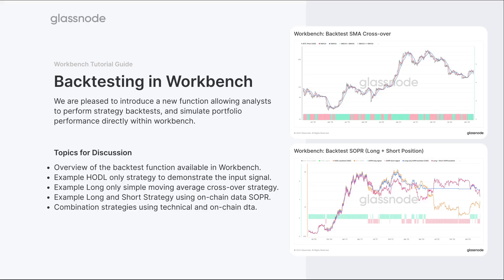In terms of backtesting and Workbench, we're going to explore just a couple of different examples. These really kind of build up the story over time so you can see how this function actually works. We'll give an overview of the function itself and its inputs. We'll cover a HODL-only strategy as a baseline, then a long-only strategy using simple moving average crossovers, then a long and short strategy using on-chain data — specifically SOPR — and finally a combined signal using both the crossover and the SOPR signal.